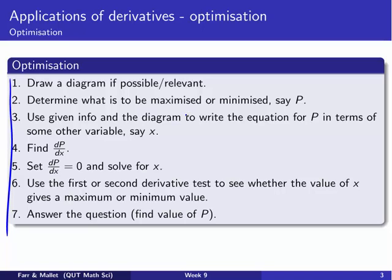We need to determine what it is we need to maximise or minimise — identify that in the question you're given. Here I'll just call that P, but call it whatever makes sense for your problem. Then, using your given information and diagram, we try to write an equation. This is the model-building stage: a model for P in terms of one other variable, or possibly more — say X.